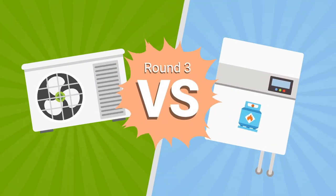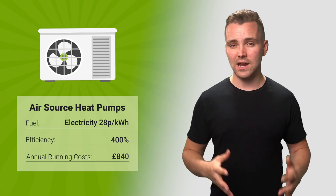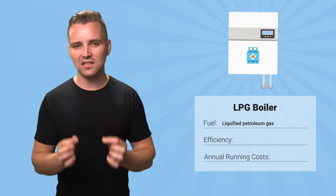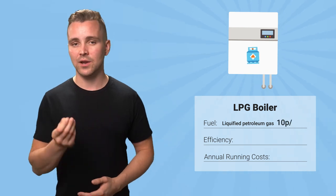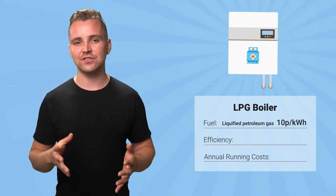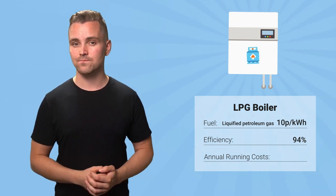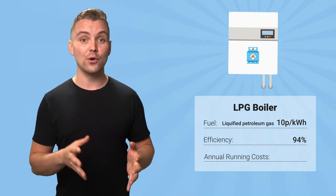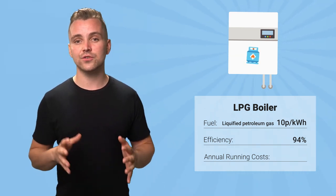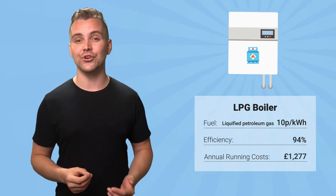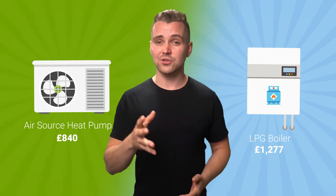Air source heat pumps stay in the ring — but how will they fare against oil boiler's leaner cousin, the LPG boiler? Liquefied petroleum gas is available at a slightly lower price of 10p per kilowatt hour, and LPG boilers can have efficiency levels of up to 94%. Even though they get closer than their oil-powered cousins, LPG boilers still cost more to run, with an annual running cost of £1,277.